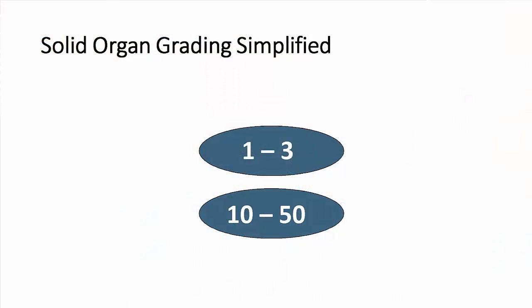There are really just two pairs of numbers that you need to memorize in order to do this accurately: one and three, ten and fifty. The one and three refer to depth of laceration in centimeters. The ten and fifty refer to the percentage of subcapsular hematoma on and around the spleen itself. Just remember — one and three centimeters, ten and fifty percent.